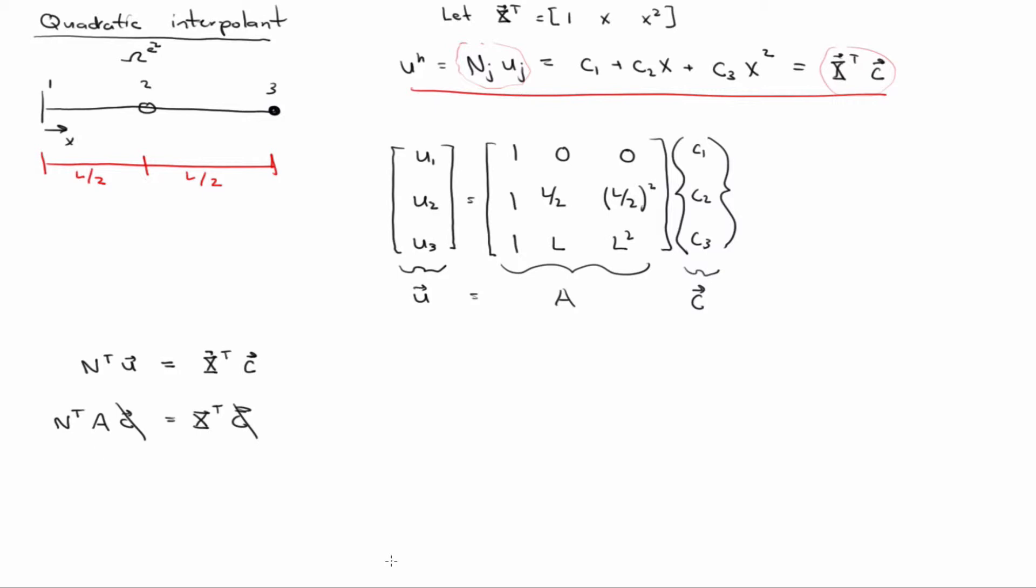And then I can multiply what's left on the right-hand side by a inverse. Alright, well what's a times a inverse? It's the identity matrix, the identity matrix times the vector is the vector, so I get n transpose equal to x transpose a inverse.